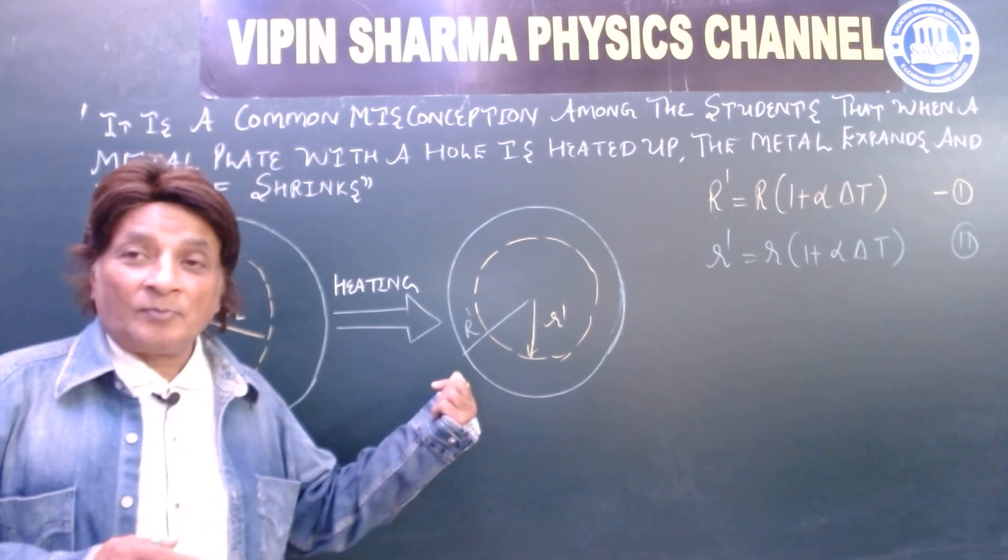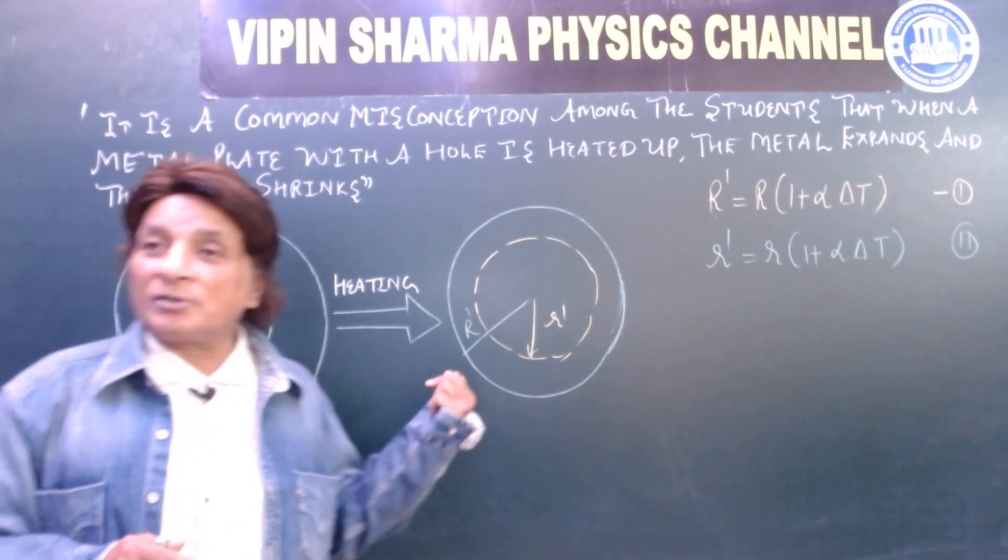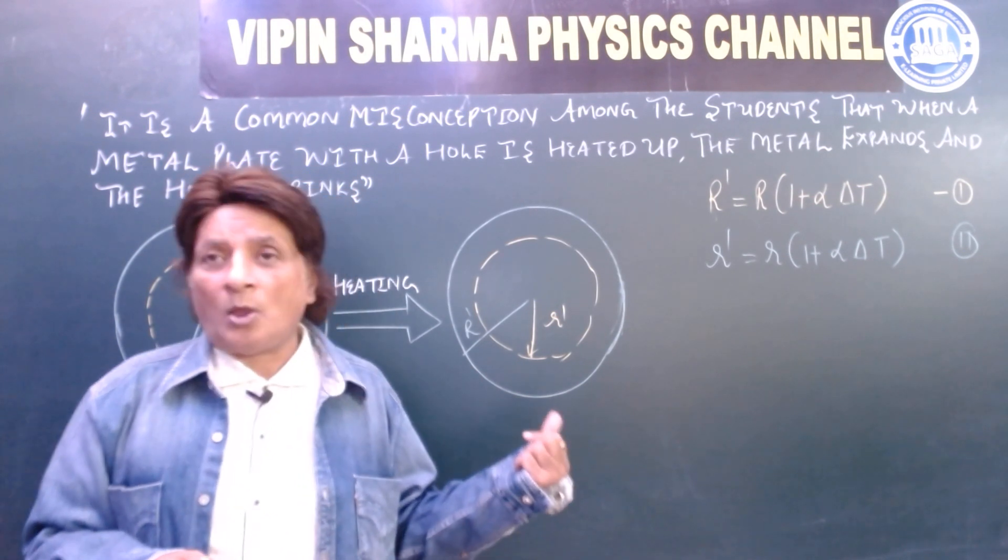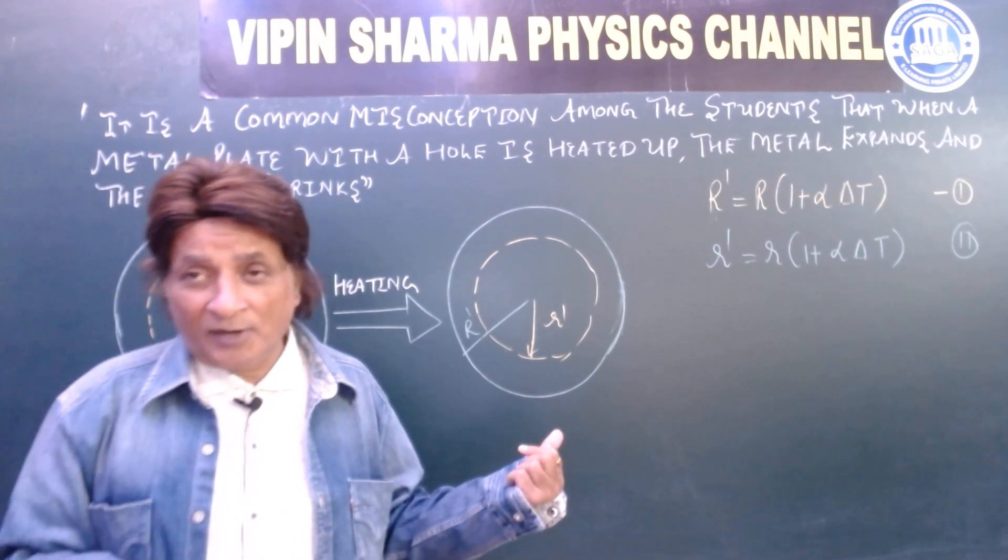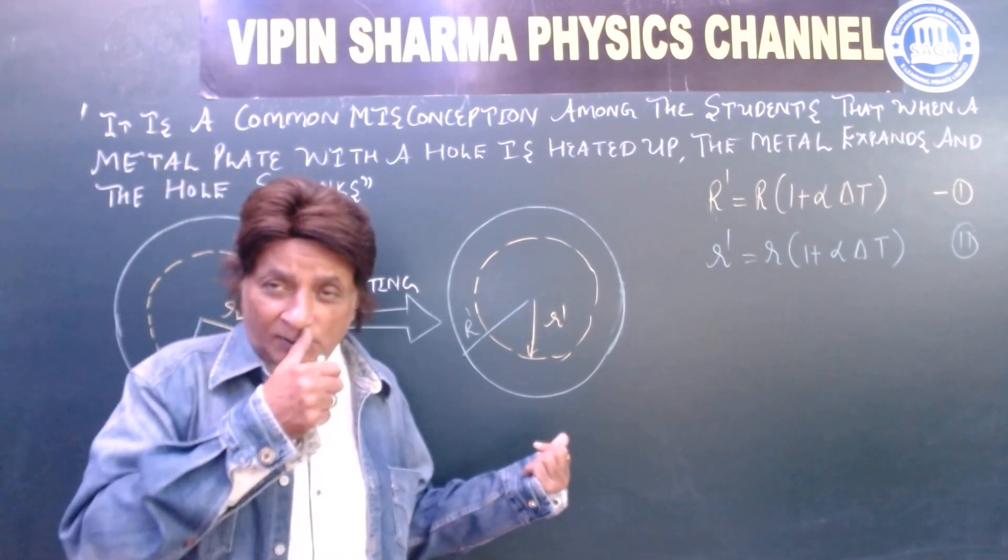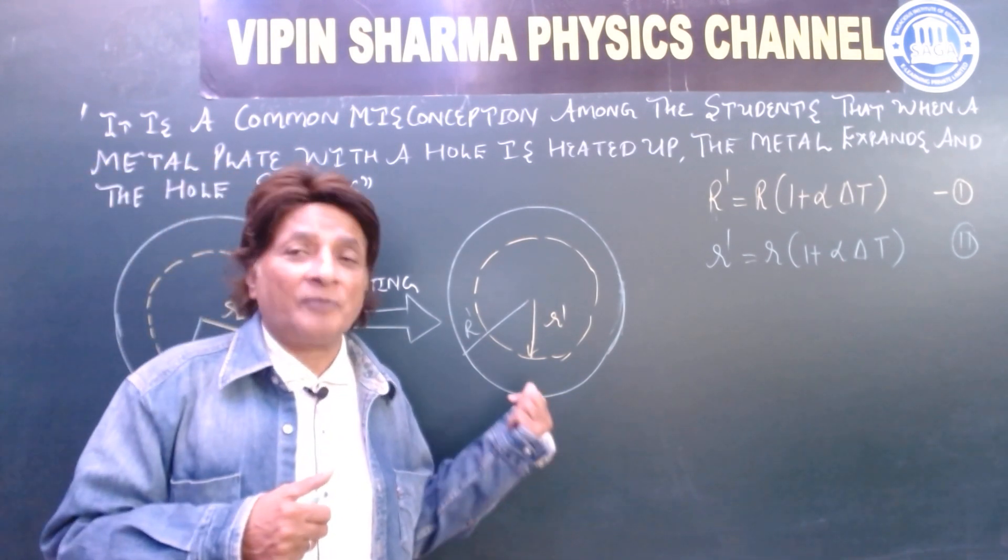r dash is change in the radius. Capital R dash is the change in the original radius of the metal plate. r dash is the change in the radius of the hole.